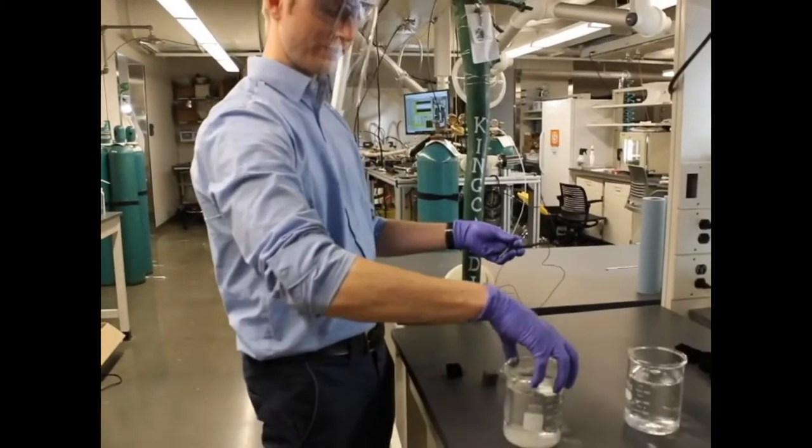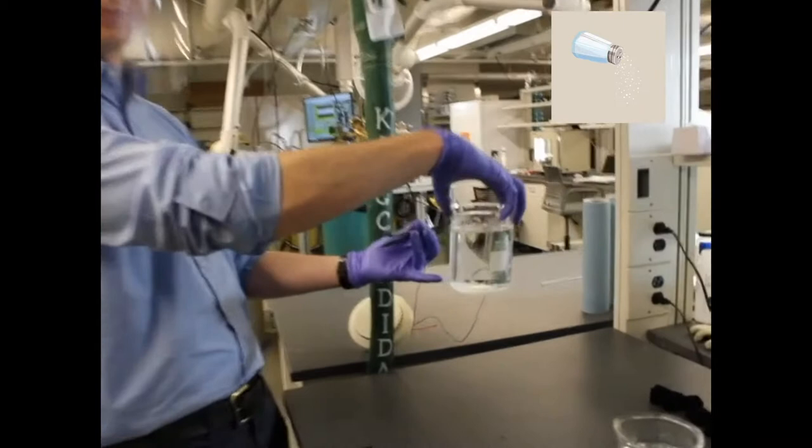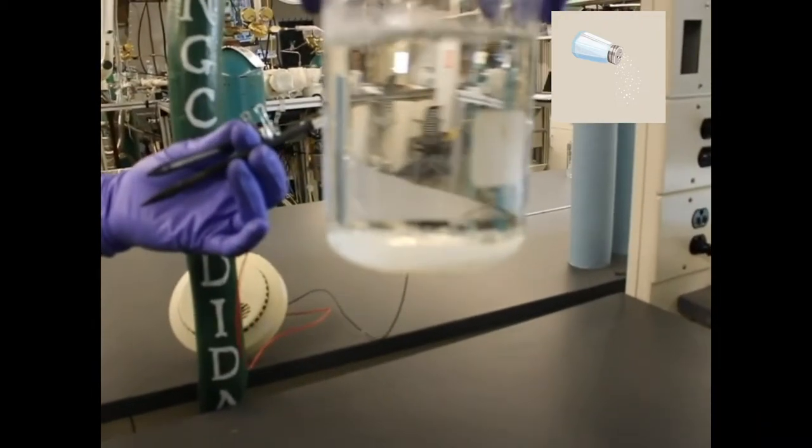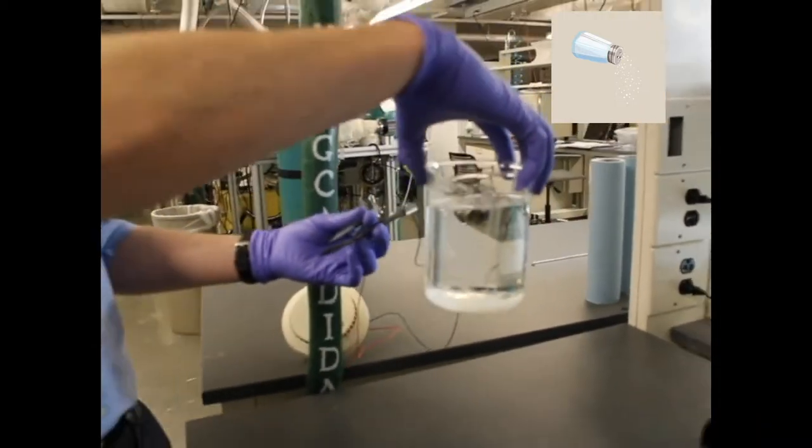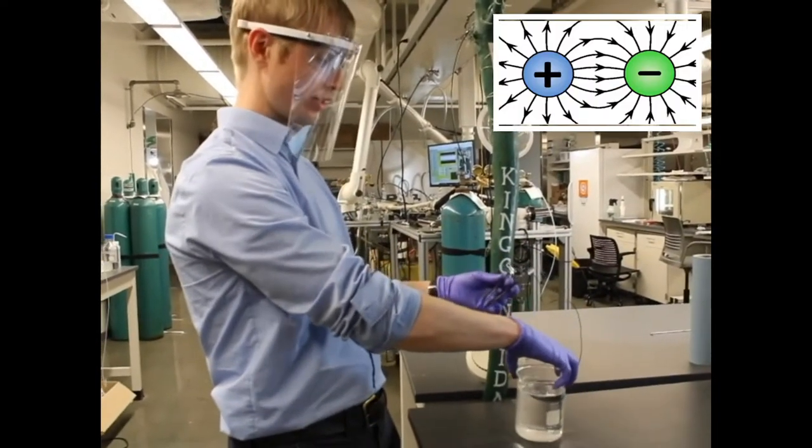I'm going to take those out and move this to the side. Here's another beaker with water. The difference is you can see at the bottom there's some salt in this one. That salt, when it goes in water, dissolves and forms charges in the water. So instead of just having water molecules, you now have positive and negative charges in the water.